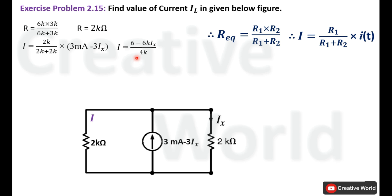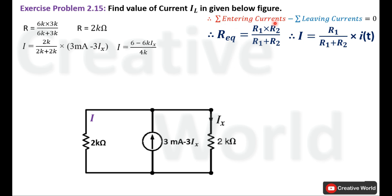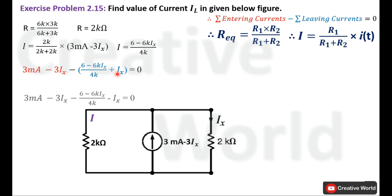Now apply Kirchhoff's Current Law on this node. The basic equation is: sum of all entering currents minus sum of all leaving currents equals zero. On this node, only one current is entering — that is (3 mA − 3ix) — while two currents are leaving: i and ix. The entering current is (3 mA − 3ix), the leaving currents are i and ix, and the value of i is (6 − 6k·ix) / 4k. Opening the brackets and multiplying by minus, both values will become negative. Inside this equation we now have only one variable, ix.